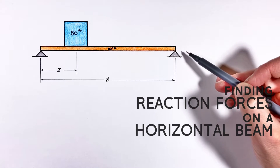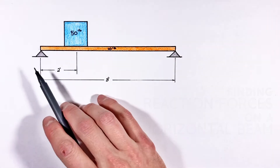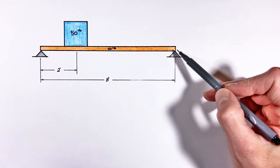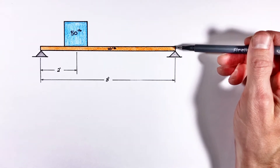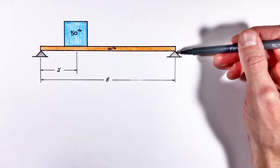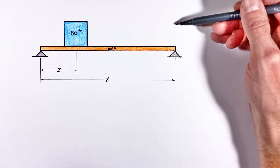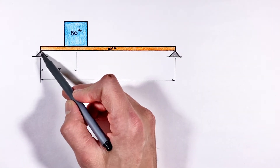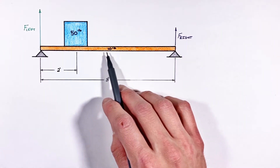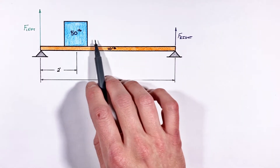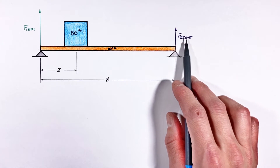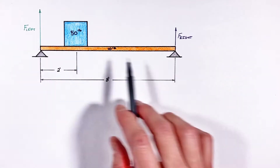Today I want to walk you through one of the most common problems in statics: a block resting on a beam that is supported at each end. We need to work out the reaction forces at each support — how hard the right support and the left support are each pushing up on the beam. Because the 50-pound load is shifted toward the left, we'll see a larger reaction force on the left side, so we can't simply split the loads evenly.